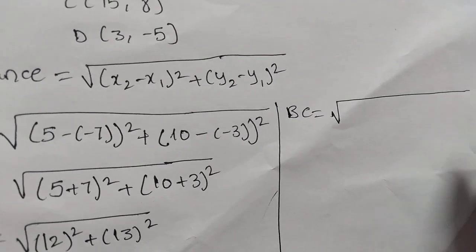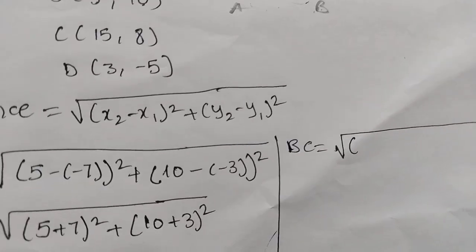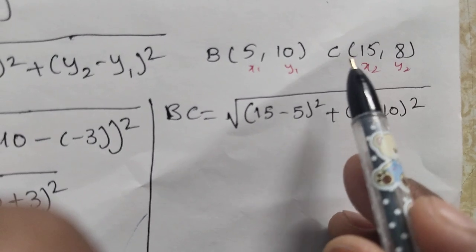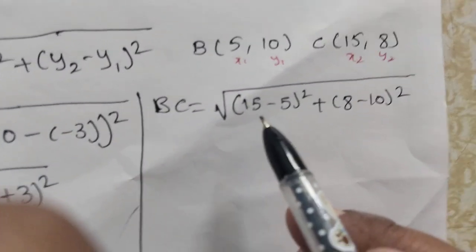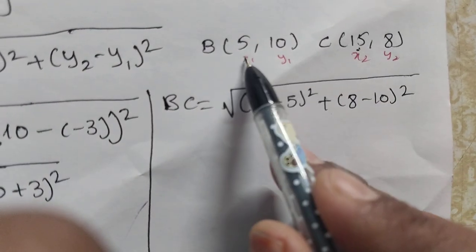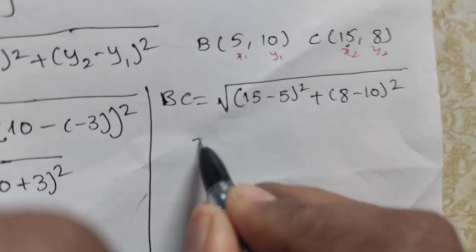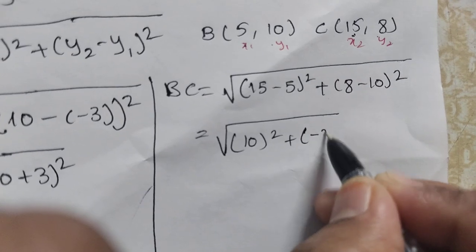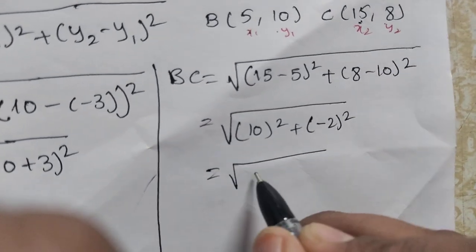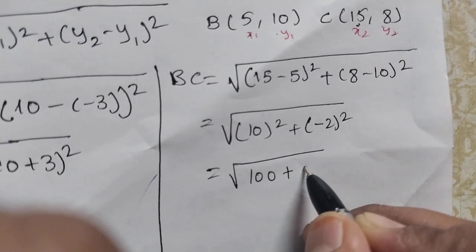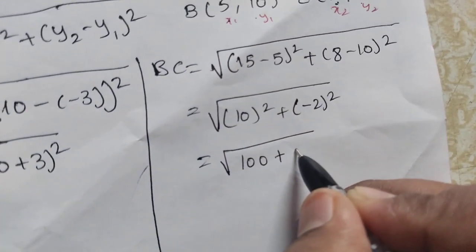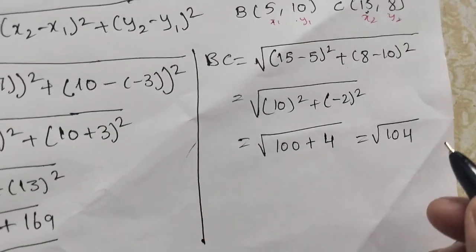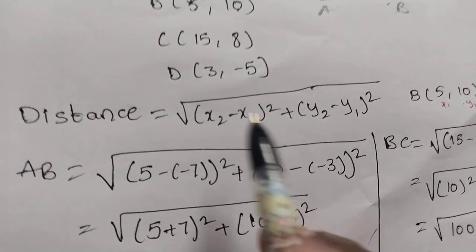Next, we find BC. Using B(5, 10) as (x1, y1) and C(15, 8) as (x2, y2): BC = √((15 - 5)² + (8 - 10)²) = √((10)² + (-2)²) = √(100 + 4) = √104.